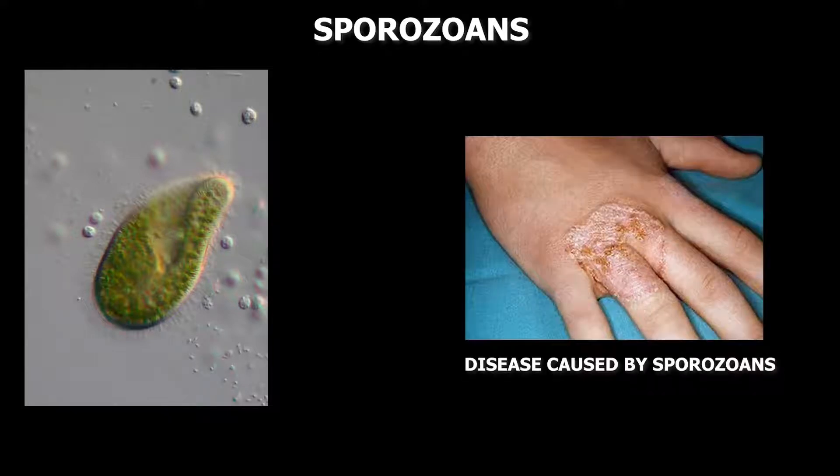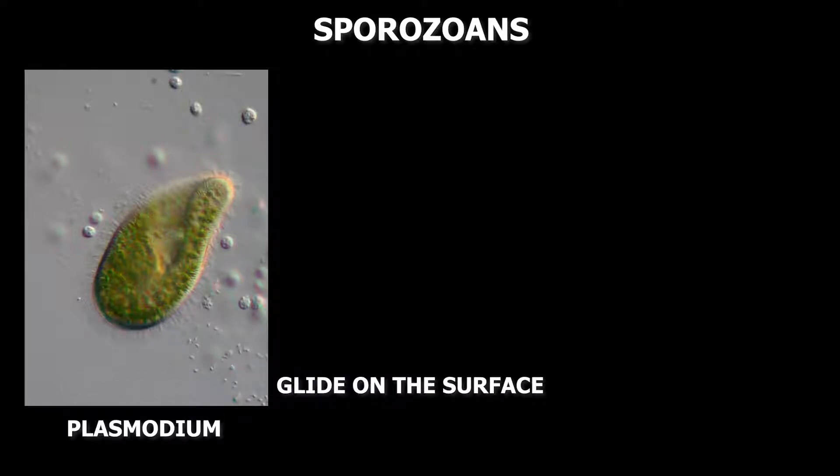Sporozoans are parasites which cause diseases in plants and animals. They do not have any movement organelle and glide on the surface. Plasmodium is a sporozoan.